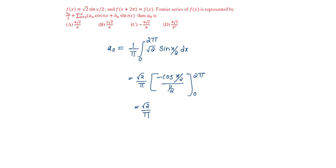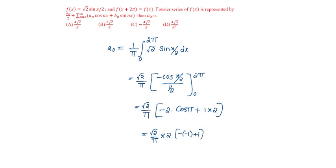...minus 2 into cos(pi) plus cos(0) is 1, into 2, which is equal to root 2 by pi into 2 into [minus(minus 1) plus 1], that is 2 again, so we get 4 root 2 by pi. Option A.